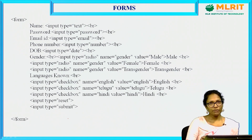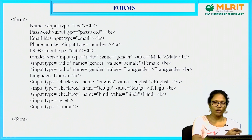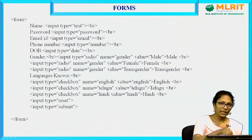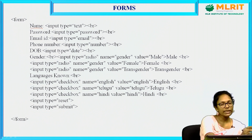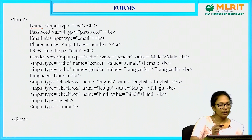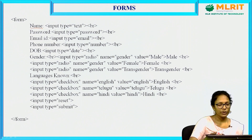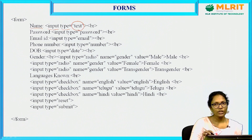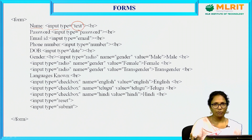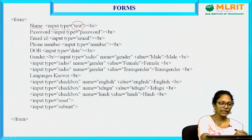Here is a simple example covering all the tags we discussed — a basic application form. Instead of label, I am directly giving the name. For 'Name', I need to create a text box, so the syntax is input type equal to text. It will create a text field which accepts both numbers and text — for example, an email ID may contain numbers, characters, and special symbols, so it is taken as type text.